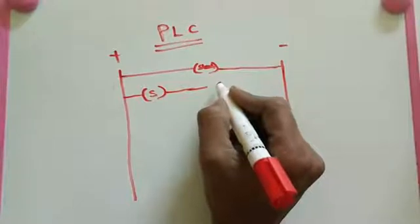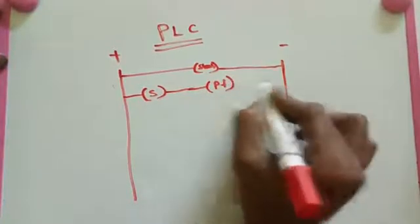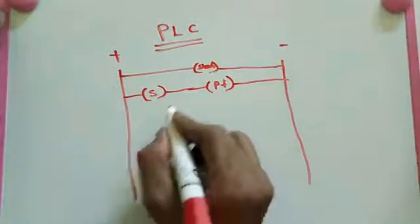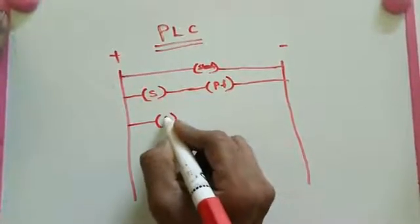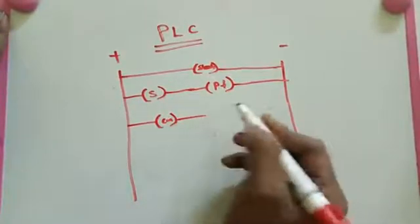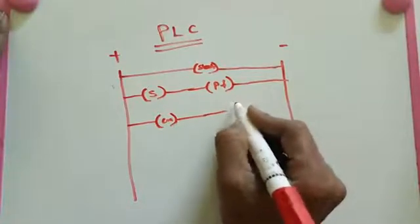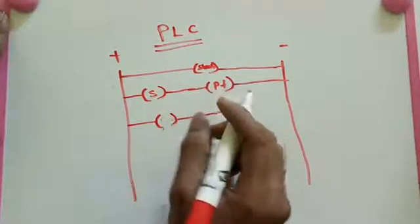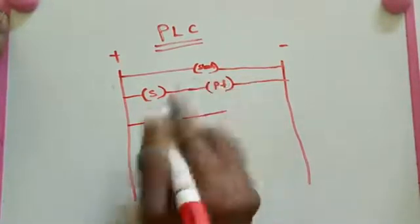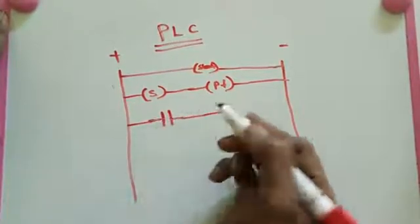Just here phase failure relay coil and neutral. Then here we put some conductor. This connector going to - sorry, here we make phase failure relay's NO connector.